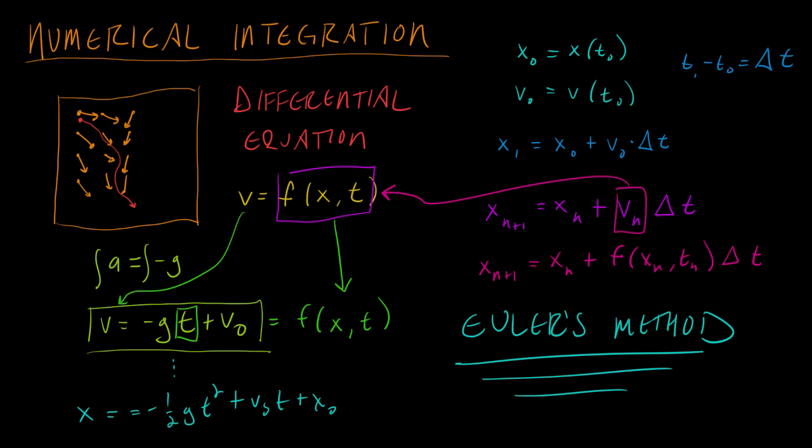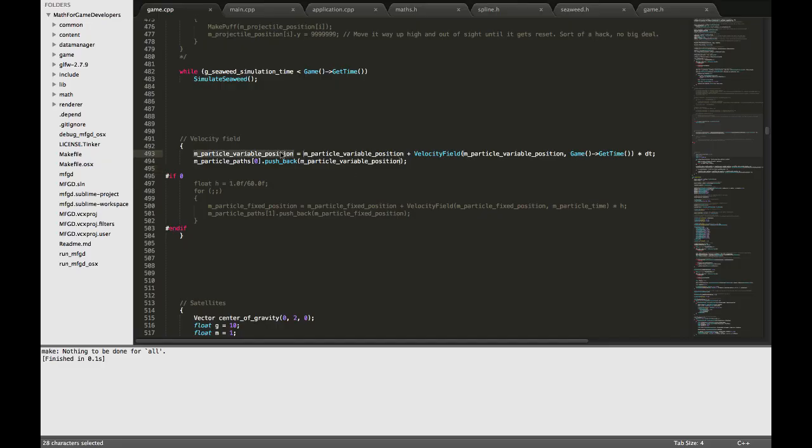Let's go to the code section of the video and we'll see this in action. So here we have a position, a particle position, that we are going to do integration on. Here's our formula. We query the velocity field at the current position and time. This is the equivalent of our F function from the previous part of the video. That's the differential equation that returns the velocity. And then, as before, we multiply it by delta t.